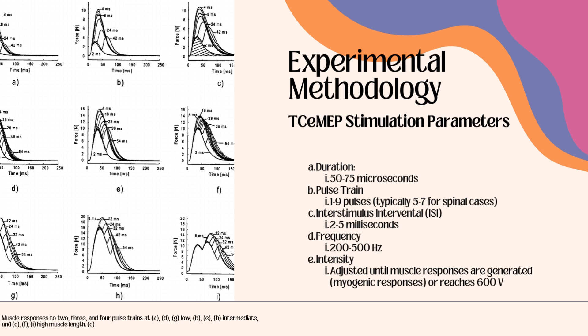The pulse configurations can be as follows: single pulse, which is used for basic motor threshold assessments; paired pulse, which is typically used when studying cortical excitability; and train of 5, which is used in surgery for stronger activation. A graph is included here that depicts 2, 3, and 4 pulse trains at different muscle lengths.